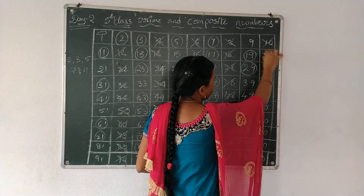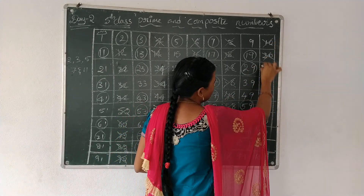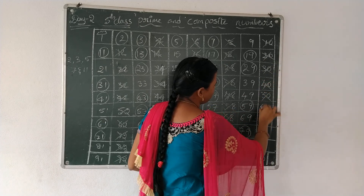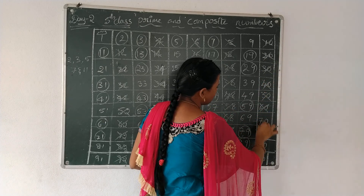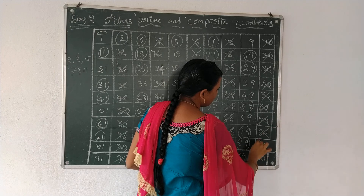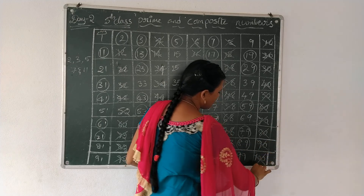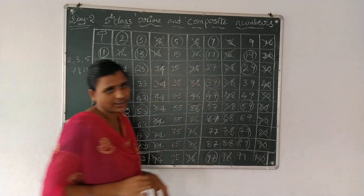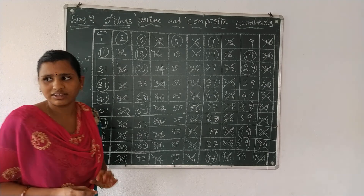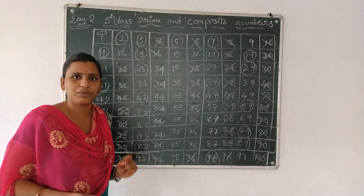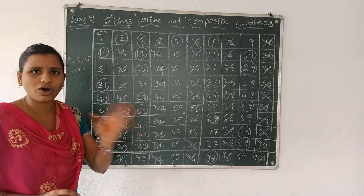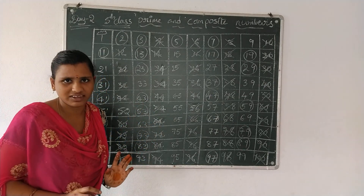And the 10 series: 10, 20, 30, 40, 50, 60, 70, 80, 90, and 100. So these are all the even numbers up to 100. These are the composite numbers, except 2. All even numbers are composite numbers.